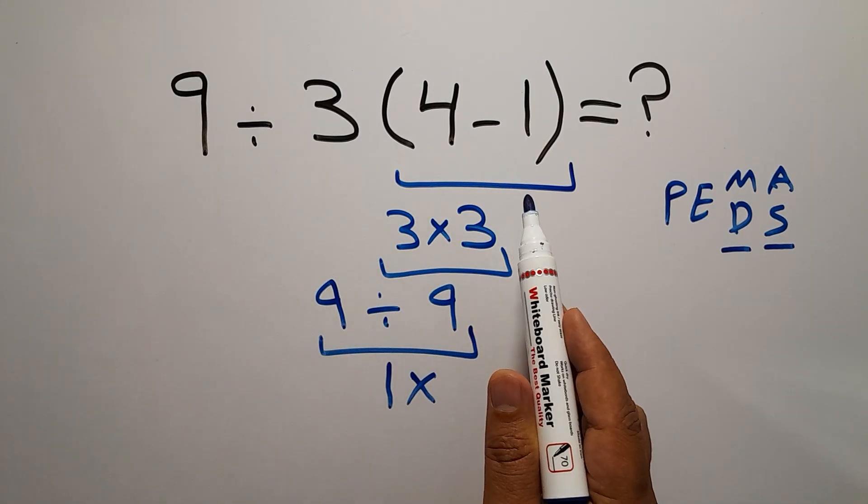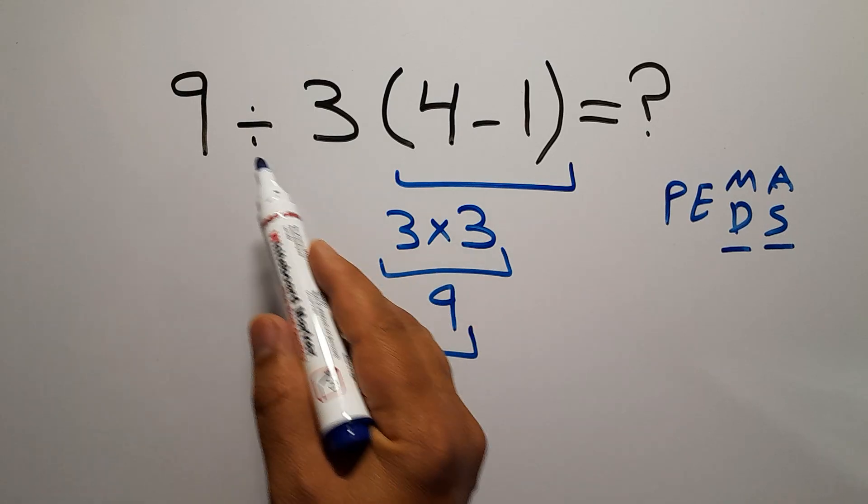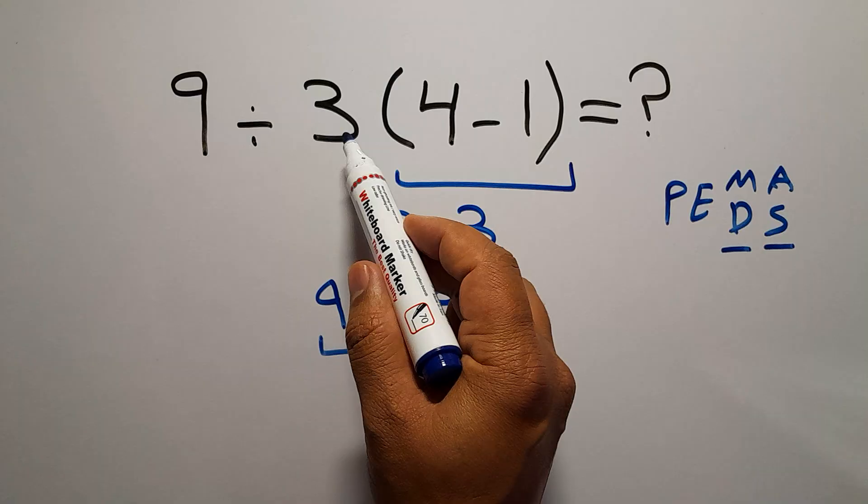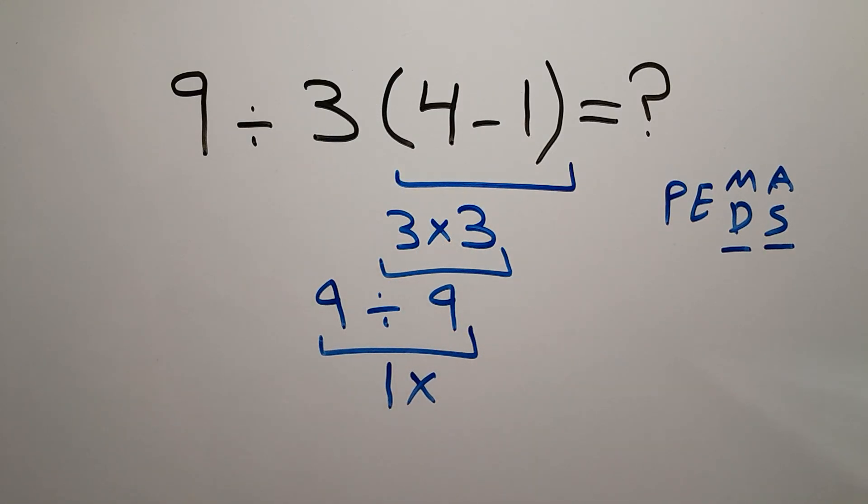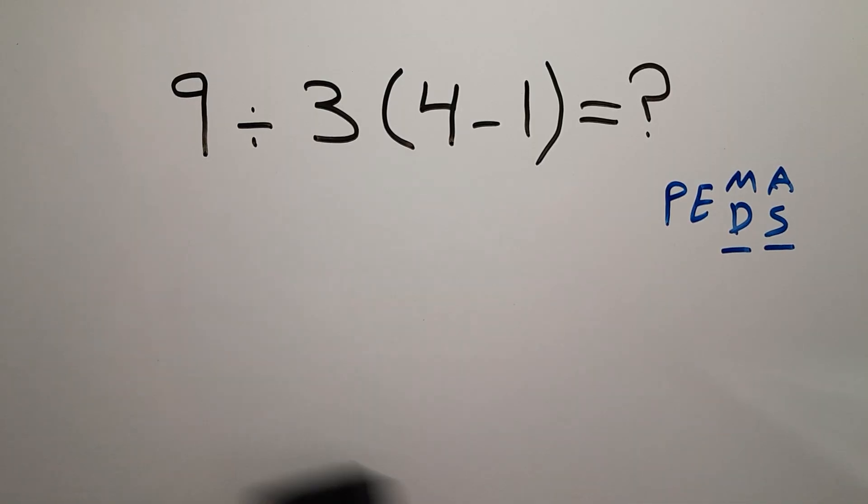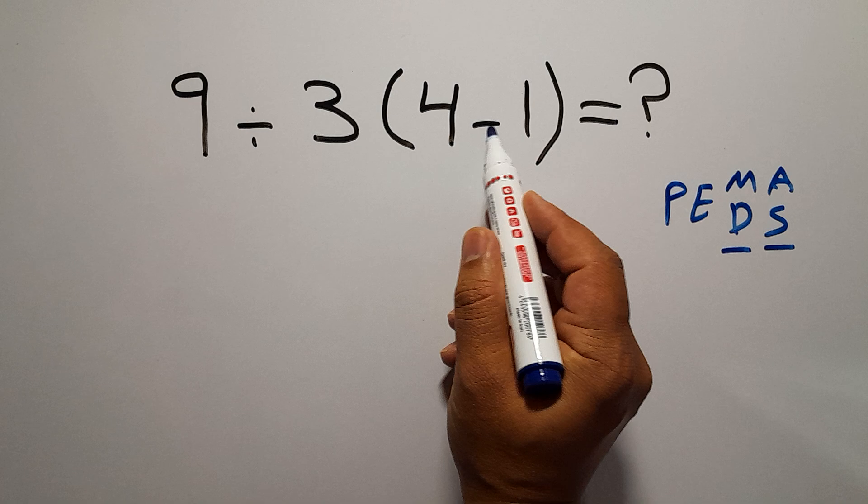We work from left to right, so after this parentheses we do this division, not this multiplication, and finally we do this multiplication. Okay, let's do it. Inside this parentheses we have 4 minus 1, which...